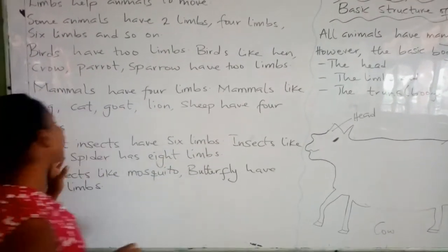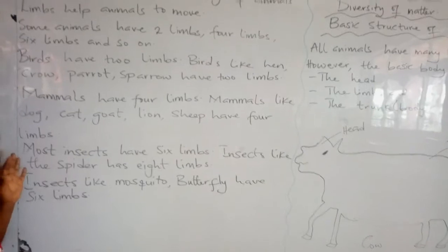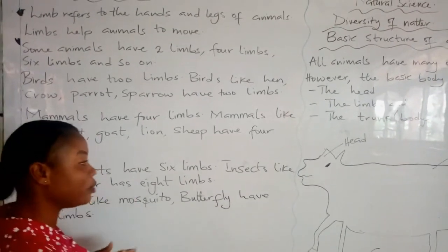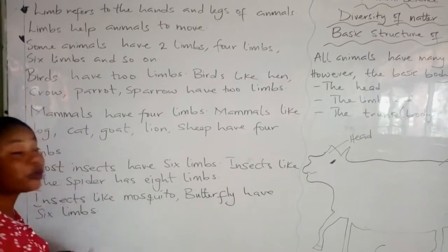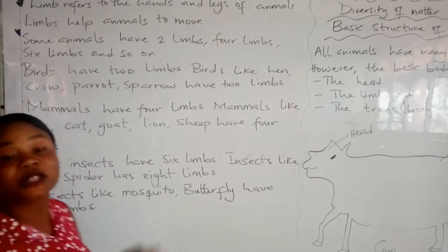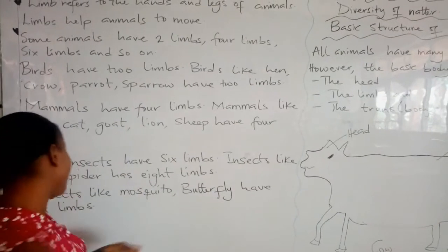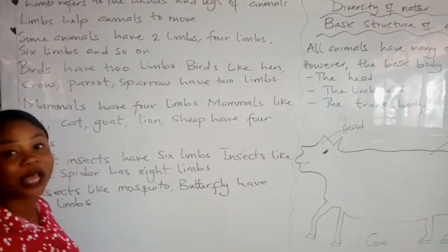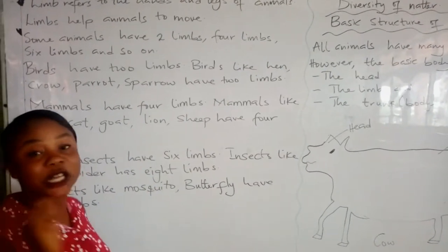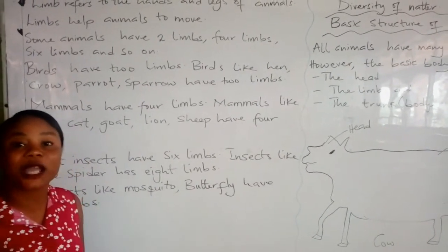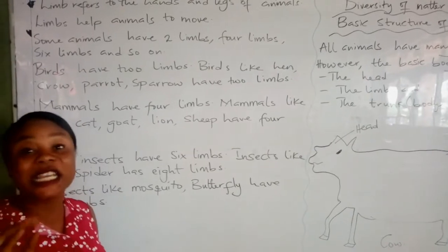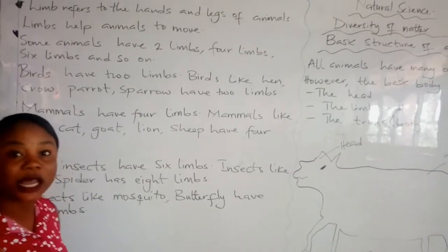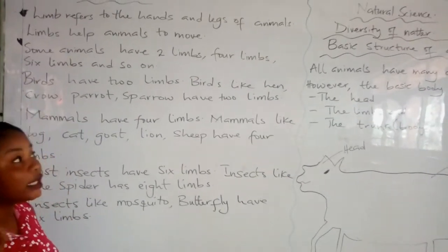Now we move to insects. Some insects have six limbs. Examples of insects that have six limbs are mosquito and the butterfly. But for the spider, the spider has eight limbs.